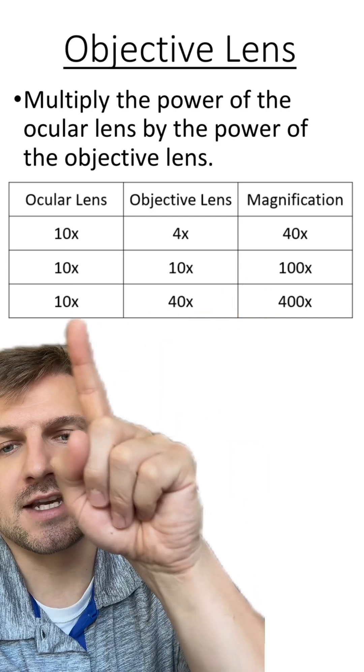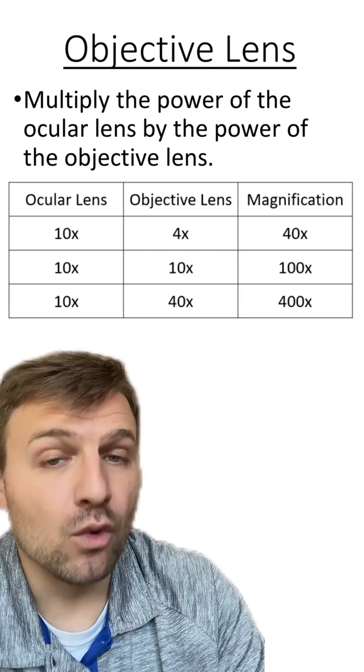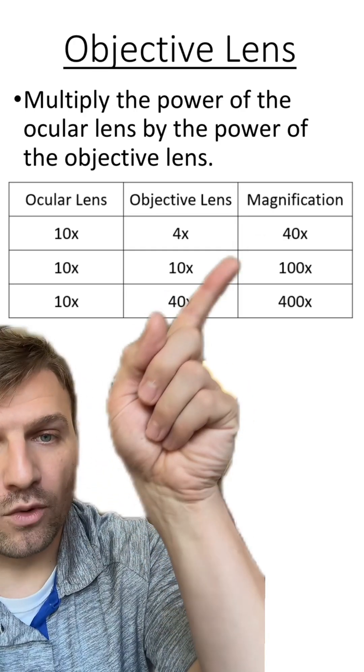So 10 times 4 is 40, 10 times 10 is 100, and 10 times 40 is 400. So the total magnification of the microscope for the three objective lenses, alongside the ocular lens, again, are 40, 100, and 400.